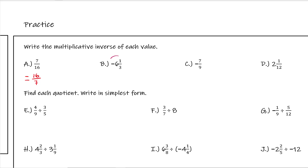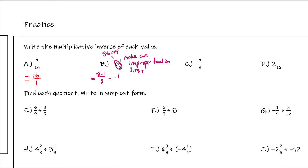To do mixed numbers, we're going to turn them into improper fractions first. So we need to do 3 times 6, which is 18, so it becomes negative 18 plus 1 over 3, which is negative 19 over 3. Then our reciprocal would be negative 3 over 19.